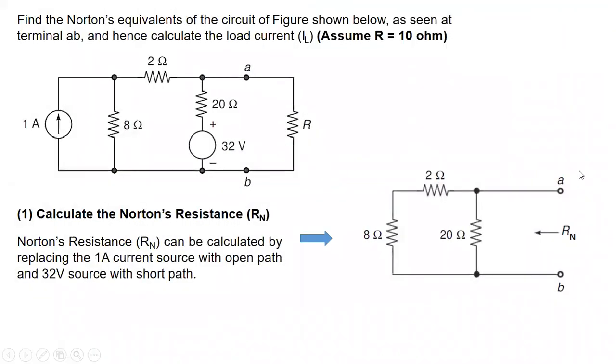Let us consider one electric network which is shown here. And we will try to find out the Norton's equivalent of this network across these two AB terminals, as it is mentioned in the statement of the equation. And then we will calculate the load current which is flowing through this resistance R, assuming the value equal to 10 ohm. Now to get the Norton's equivalent of any electrical network, we need two important parameters. And these parameters are calculated for this circuit apart from the load resistance.